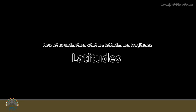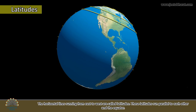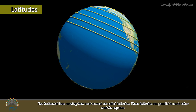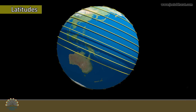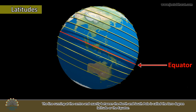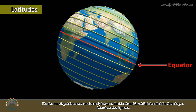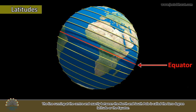Now let us understand what are latitudes and longitudes. The horizontal lines running from east to west are called latitudes. These latitudes run parallel to each other and the equator. The line running at the center and exactly between the north and south pole is called the zero degree latitude, or the equator.